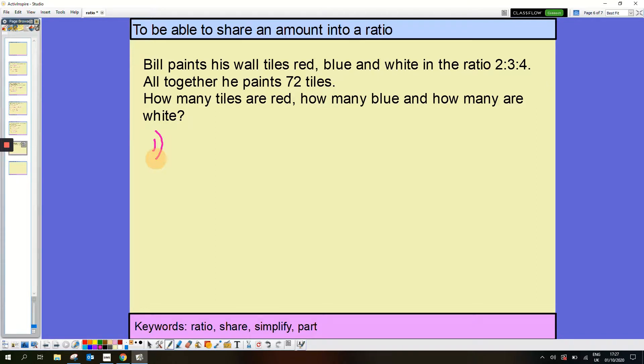Number 2. 72 divided by 9 is 8 tiles. And my last thing then, I've got 3 things to work out this time. I've got red, blue and white. Red is 2 lots of 8, 16. Blue is 3 lots of 8, is 24. And white is 4 lots of 8, that's 32.